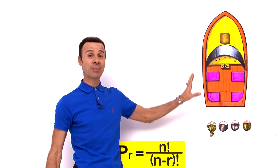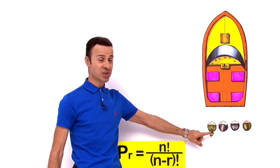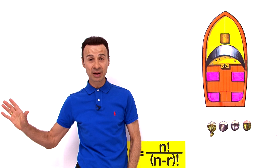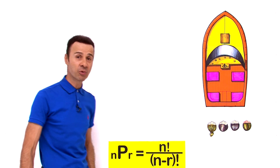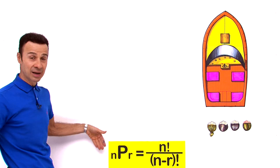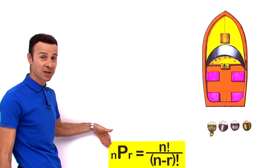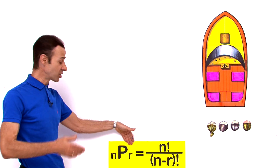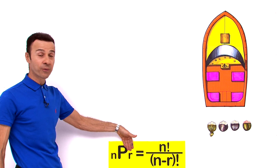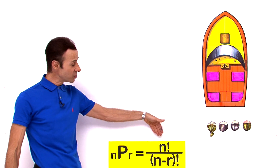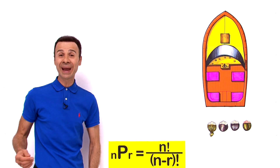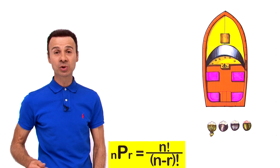First let's work out the number of arrangements whereby she gets a seat on the left hand side, and then we will work out the probability. We are going to be using the formula where the number of permutations is n objects taken r at a time, which equals n factorial all over n minus r factorial, where n is greater than or equal to r.